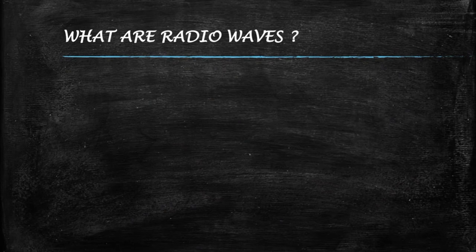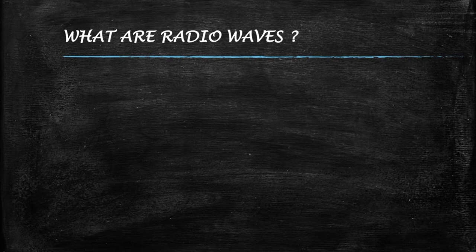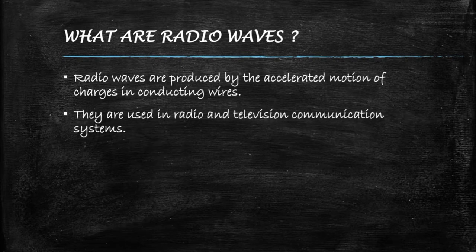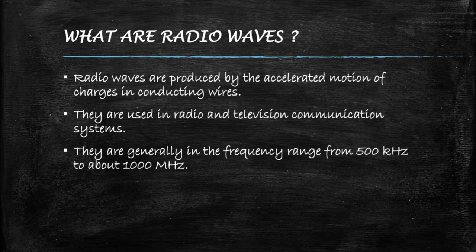The first one is radio waves. The term radio reminds us about radios, FMs, mobile communications, telecommunications, etc. Do you know how they are produced? The accelerated motion of charges in conducting wires produces these radio waves, and their frequency ranges from 500 kHz to about 1000 MHz.